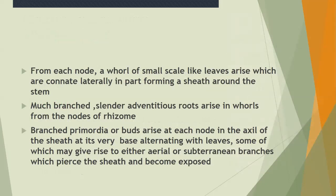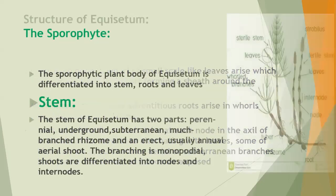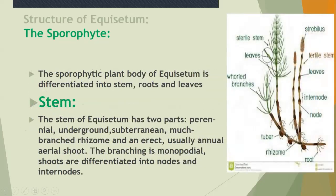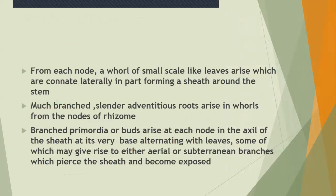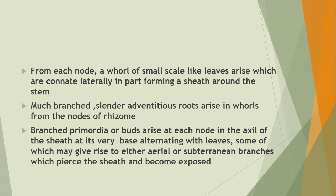From each node, a whorl of small scale-like leaves arises, which are connate laterally in part, forming a sheath around the stem. Much-branched slender adventitious roots arise in whorls from the nodes of the rhizome. Branch primordia, or buds, arise at each node in the axil of the sheath, alternating with the leaves, and some of these may give rise to either aerial or subterranean branches.